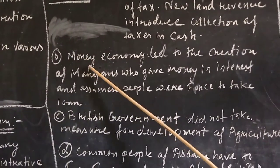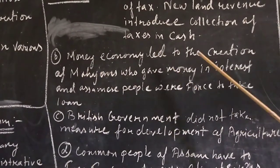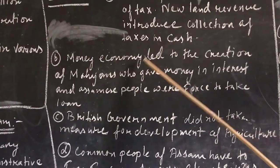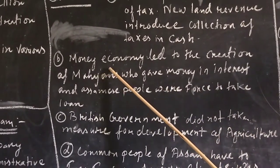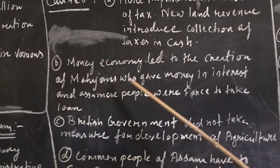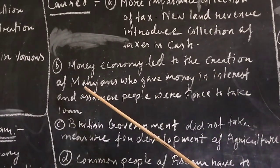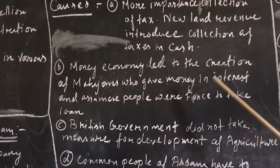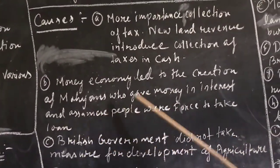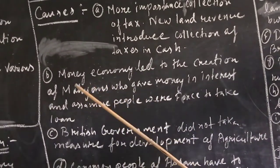The second reason: the money economy led to the creation of Mahajans who gave money on interest. When the British government announced that tax had to be paid in cash, people had to arrange money somehow. To do so, Assamese people were forced to take loans from Mahajans at high rates of interest, which was one of the reasons for the anti-British uprising.